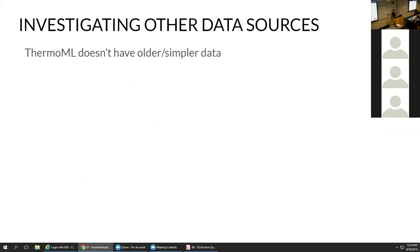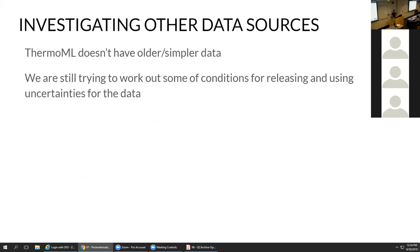ThermoML does not have older, simpler data — they started collecting in the 90s, so data like the density of ethanol as a function of temperature, generated long ago, isn't there. One issue with ThermoML is that while all the data is public, some of the uncertainties and the data analysis and curation are not entirely public. We've been working with ThermoML to nail down conditions for what we can release — which is why for the existing data set we're using average uncertainties rather than curated uncertainties. This has been complicated by the thermodynamic research center directorship changing last month.